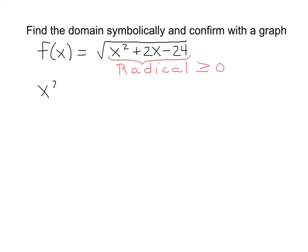So for this problem, that gives us x² + 2x - 24 must be greater than or equal to zero. That is, it cannot be negative.